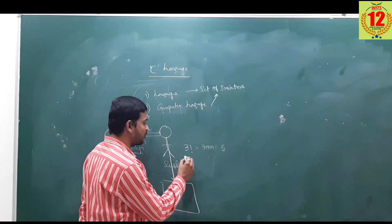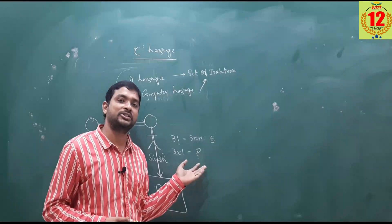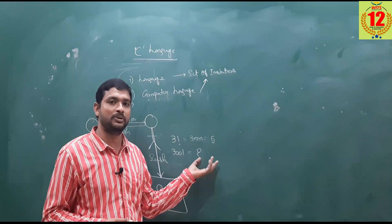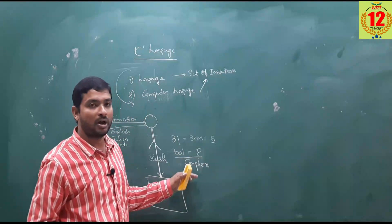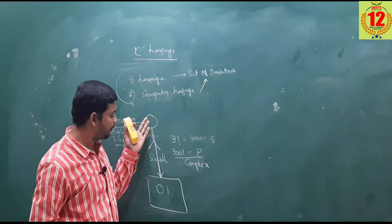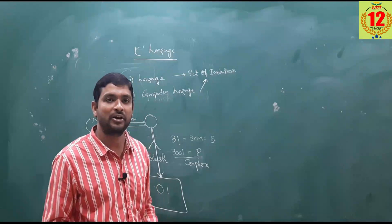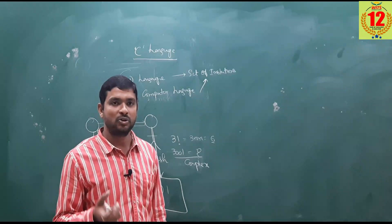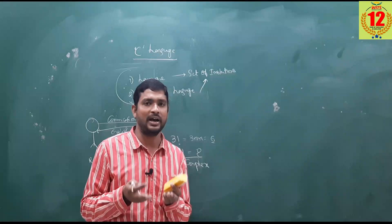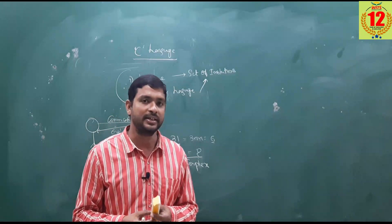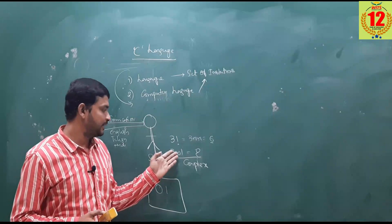But given 300 factorial — 300 factorial is not possible for a human to compute manually; it is complex. So we can communicate such problems to the computer. In the real world, for example, we have a calculator. Using a calculator, you can perform addition and subtraction of millions of numbers in a fraction of a second. That is the use of computer language.